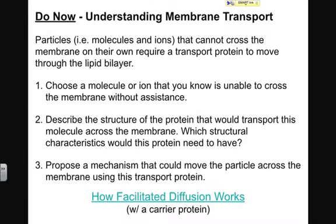Let's think about how these transport proteins might work. Transport proteins sit on the membrane and their job is to move particles that typically cannot cross the membrane on their own. Choose one of those molecules or ions that you know is going to be unable to cross the membrane. See if you can come up with the structure of a protein that would transport this particle — what would it look like, which characteristics would it need, and can you propose a mechanism for how this particle crosses the membrane? Pause the video, answer these questions, and we'll watch an animation that will begin to answer them.